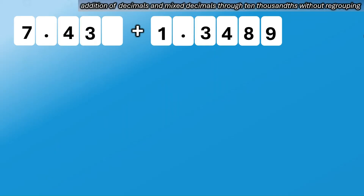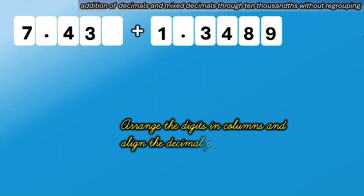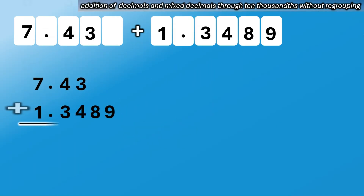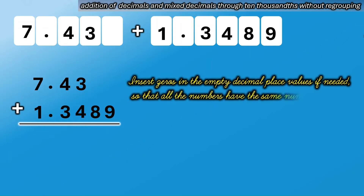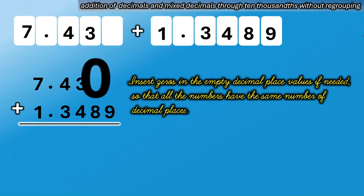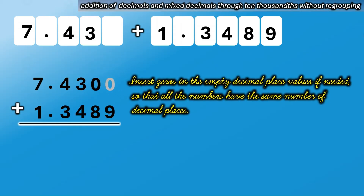Another example — this time, addition of mixed decimals through 10-thousandths. We have 7 and 43 hundredths plus 1 and 3,489 ten-thousandths. First, arrange the digits in columns and align the decimal points. Second, insert zeros in the empty decimal place values if needed, so that all the numbers have the same number of decimal places. Then we add all digits like whole numbers.